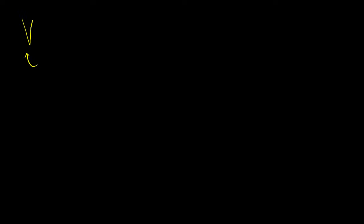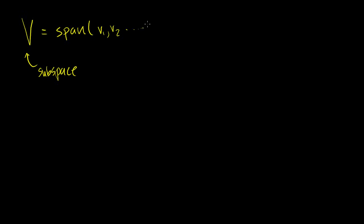Let's say I have the subspace V, and this is a subspace. We learned all about subspaces in the last video. It's equal to the span of some set of vectors, and I showed that the span of any set of vectors is a valid subspace. So this is going to be the span of V1, V2, all the way to Vn — so n vectors.